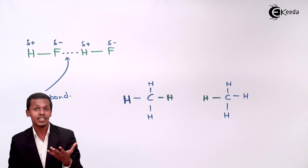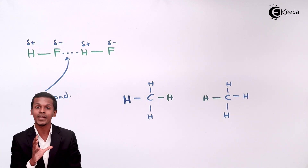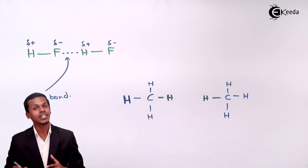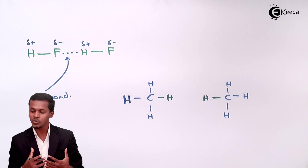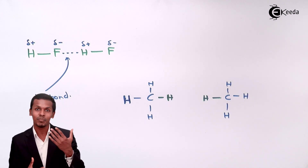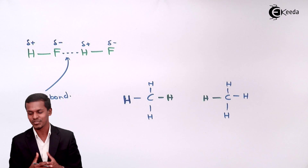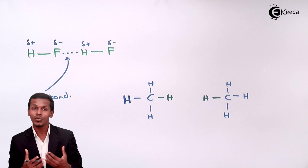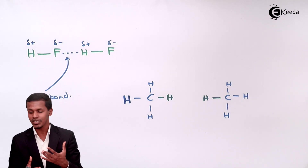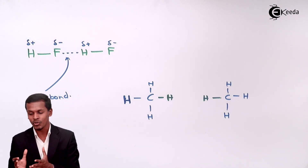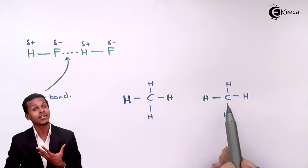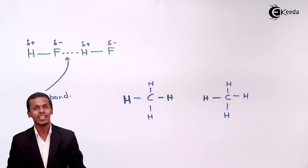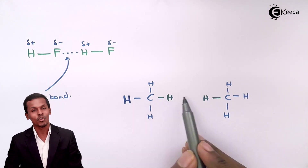Hydrogen bonding depends on the electronegativity of a particular atom. In methane, carbon and hydrogen do not have enough electronegativity difference, so they won't have a partially positive or partially negative charge. Without such partial charges, the molecule is non-polar, and therefore hydrogen bonding is not observed.